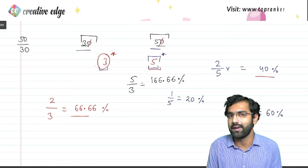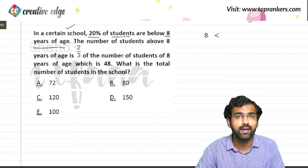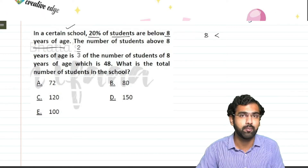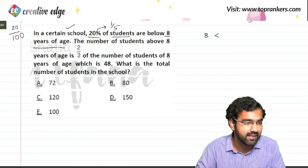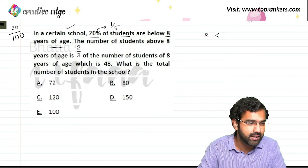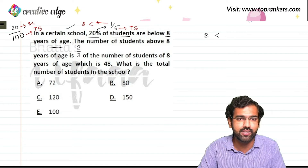Let's understand percentages better with the help of another question. In a certain school, 20% of the students are below 8 years of age. So there is a category of students who are less than 8 years old and this population is 20%. As soon as you see 20%, two things must strike your brain: either its percentage conversion or its absolute conversion. The significance of 1/5, or 20%, is that if the total students on ratio scale are 5, then 1 student is less than 8 years of age.